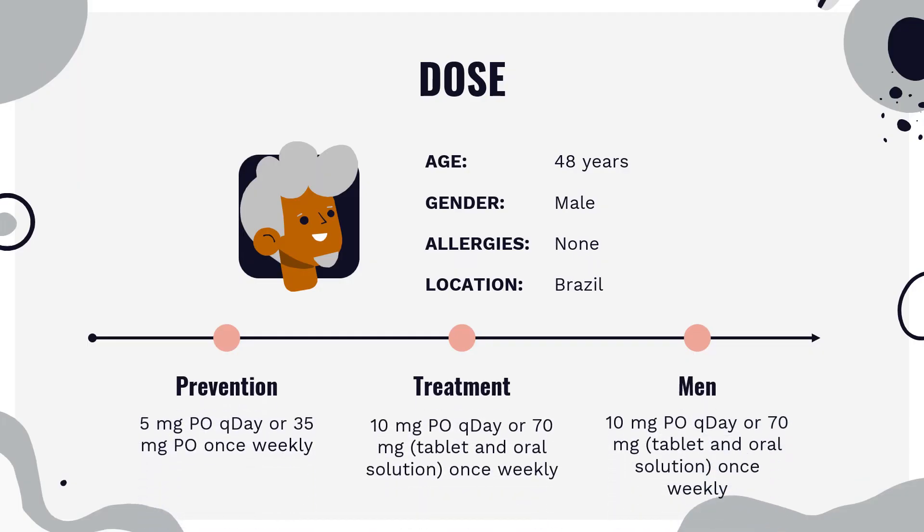Dosing for osteoporosis — Postmenopausal women: indicated for treatment and prevention. Prevention: Fosamax 5 mg PO daily or 35 mg PO once weekly. Treatment: Fosamax 10 mg PO daily or 70 mg tablet and oral solution once weekly; Binosto 70 mg PO once weekly.